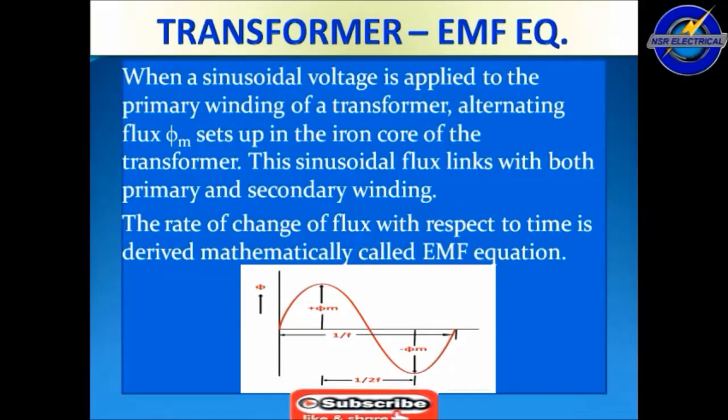Next we see the EMF equation, which is the most important equation for transformers. Using this equation we can determine the induced EMF voltage, number of turns, cross-sectional area of core, and flux density. When a sinusoidal voltage is applied to the primary winding of a transformer, alternating flux is set up in the iron core. This sinusoidal flux links with both primary and secondary windings, and the rate of change of flux with respect to time is derived mathematically and called the EMF equation.